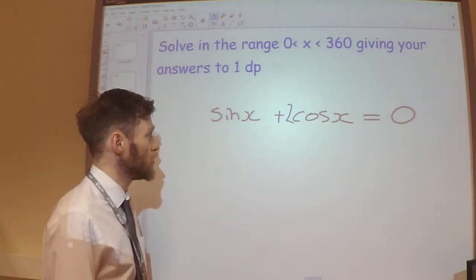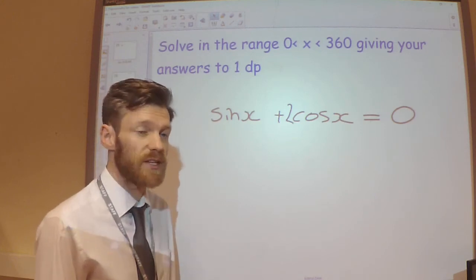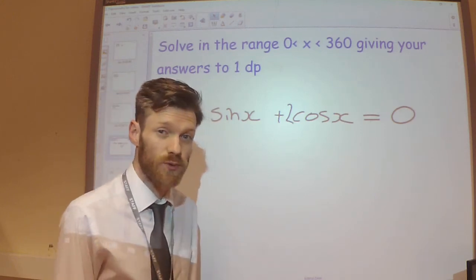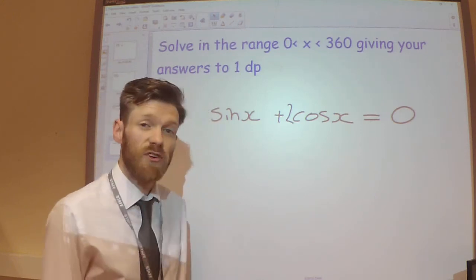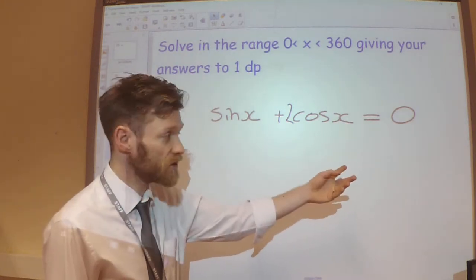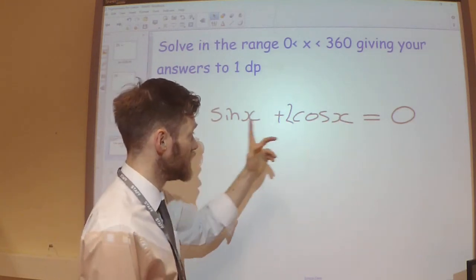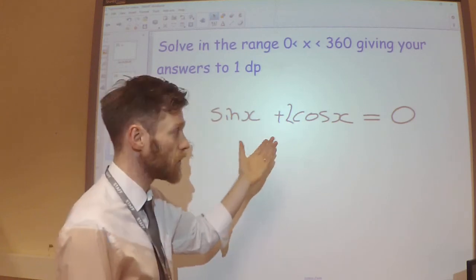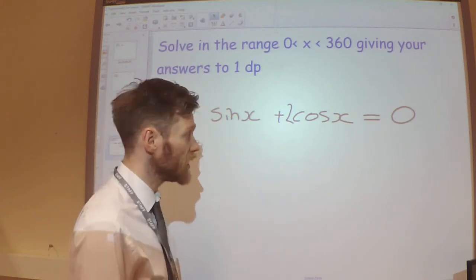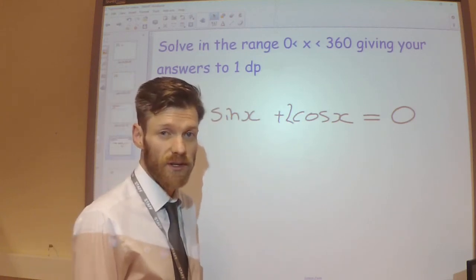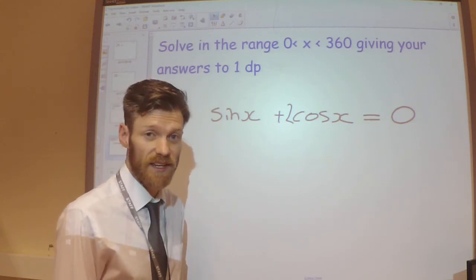So we need to solve the equation sin x plus 2 cos x equals 0. Straight away, I've got a sine and a cos. I'm going to need to try to combine those somehow, so I can just get one trigonometric function, like we had in the last video.